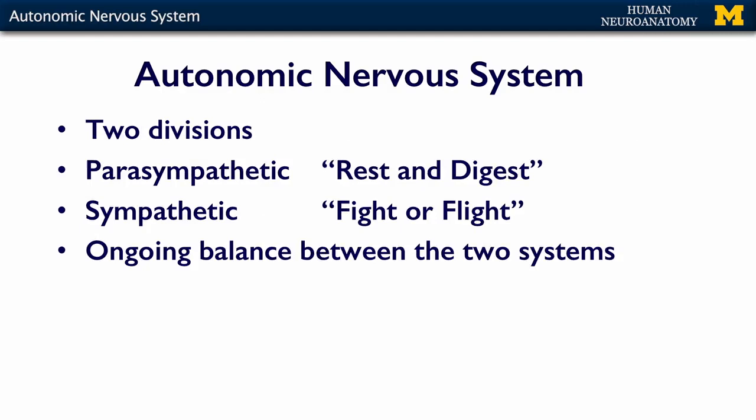There are two further subdivisions within your autonomic nervous system: the parasympathetic, or rest and digest nervous system, and the sympathetic, or fight or flight nervous system. It's an ongoing balance between the two systems. If you're awake, you're a little bit more on the sympathetic side. If you're completely asleep, just sitting there in your chair, then you're definitely in parasympathetic mode.